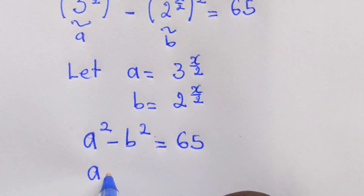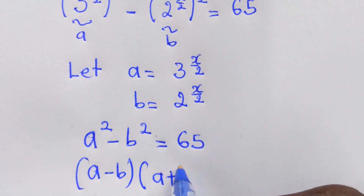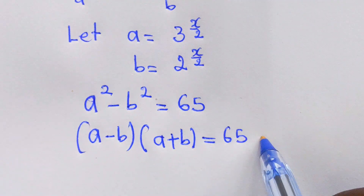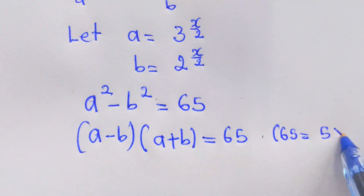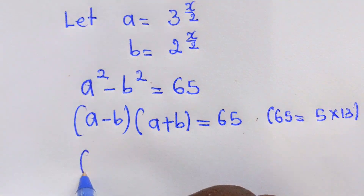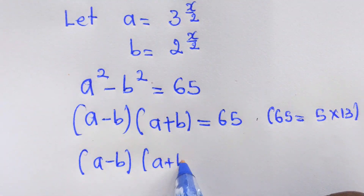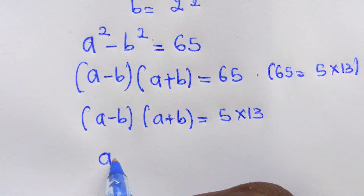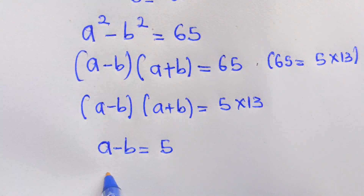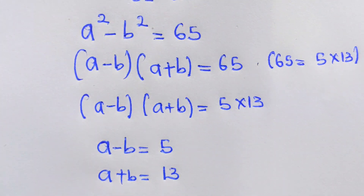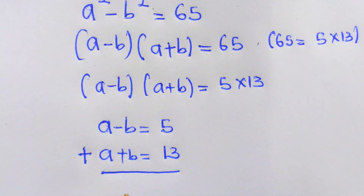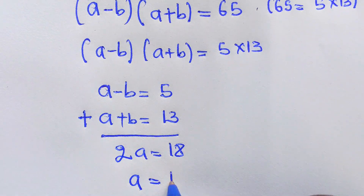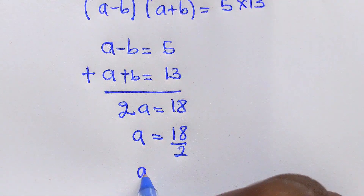And of course, a squared minus b squared factors as (a minus b) times (a plus b) equals 65. Since 65 equals 5 times 13, we equate: a minus b equals 5 and a plus b equals 13. Adding these simultaneously gives 2a equals 18, so a equals 9.